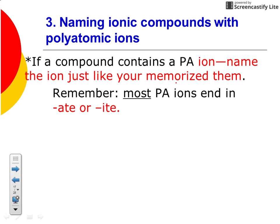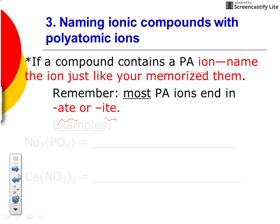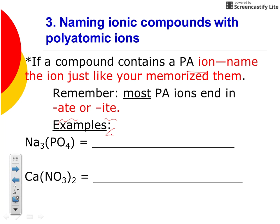Now, if you have a polyatomic ion, you just have to memorize the polyatomic ion name. Most polyatomic ions are going to end in -ate or -ite. For this example: sodium, and this is phosphate — you just have to memorize that it's phosphate. There was phosphite and phosphate; this one is phosphate.